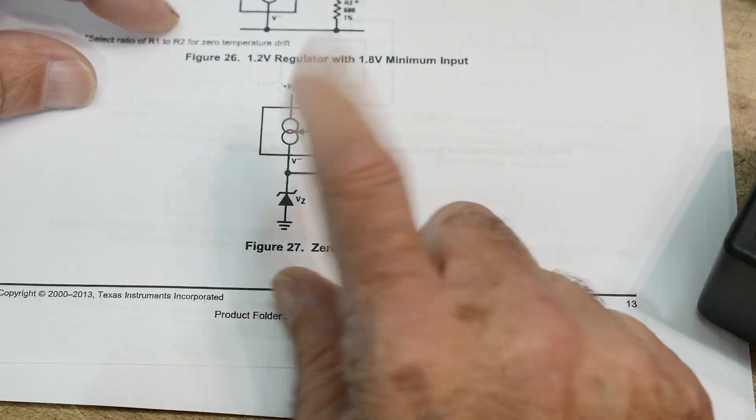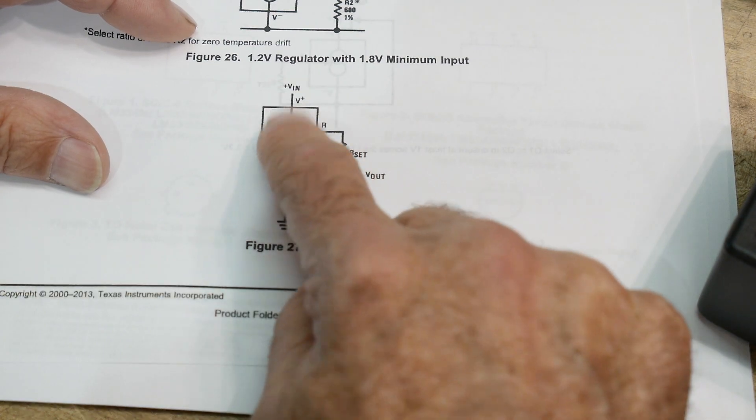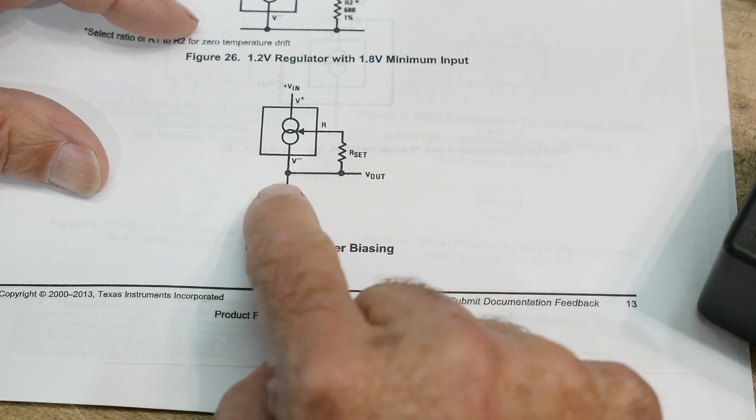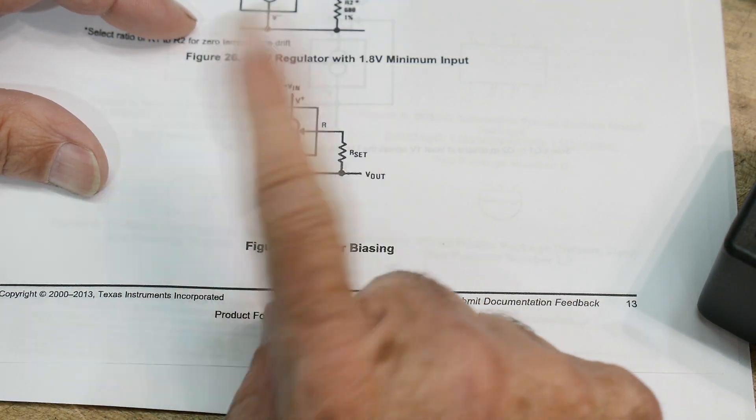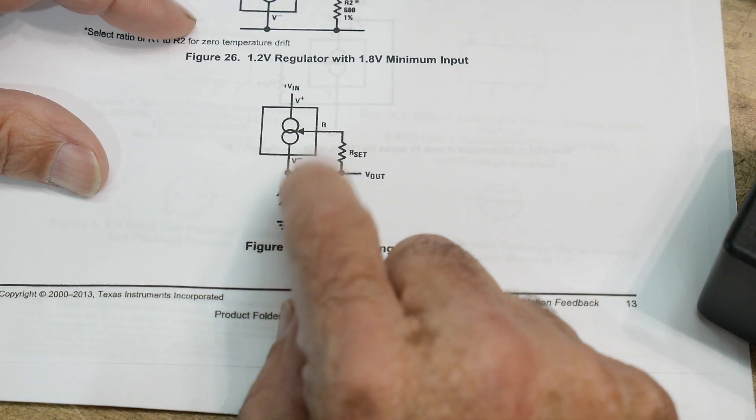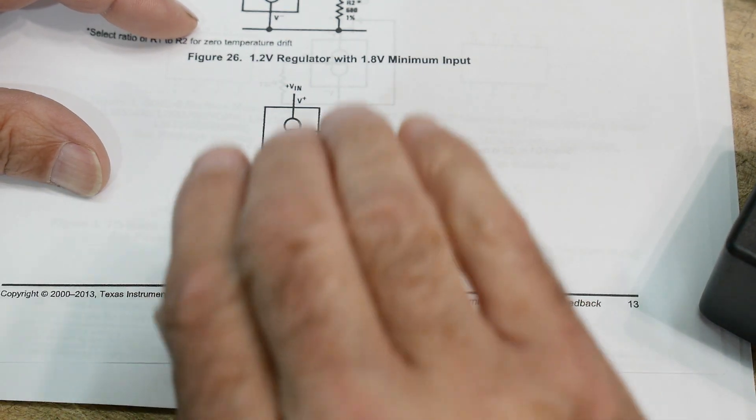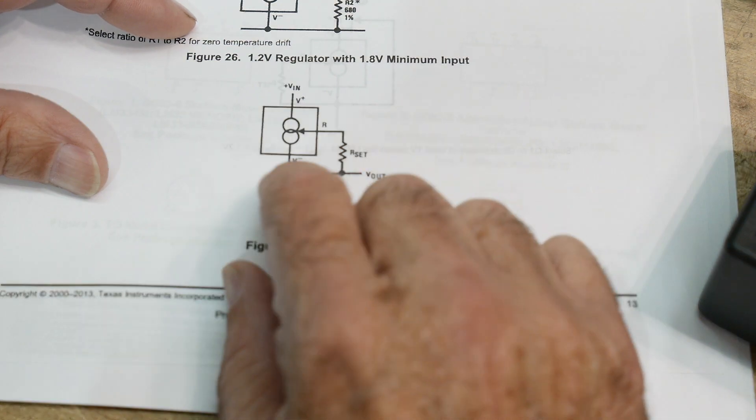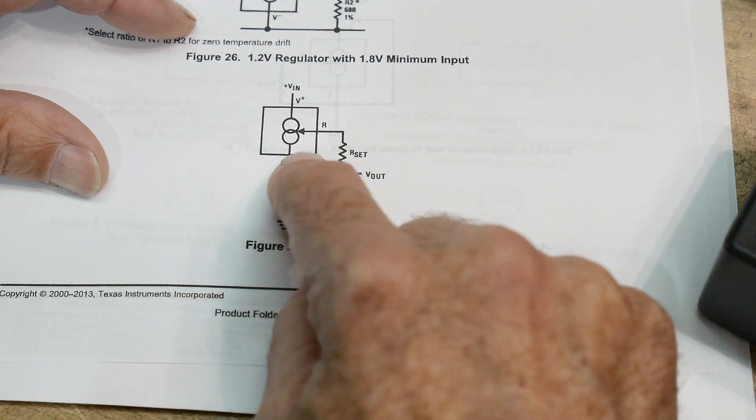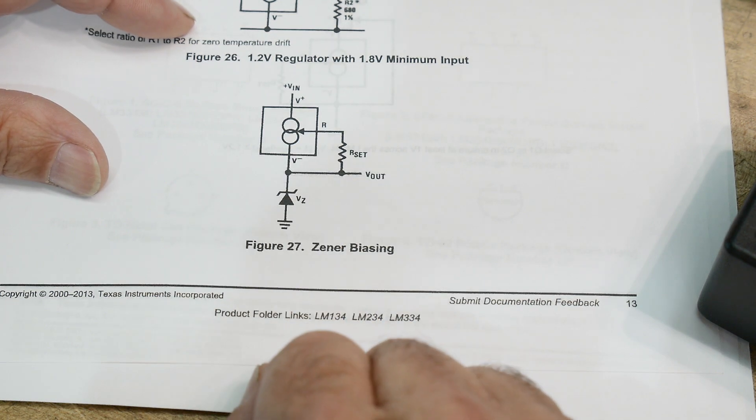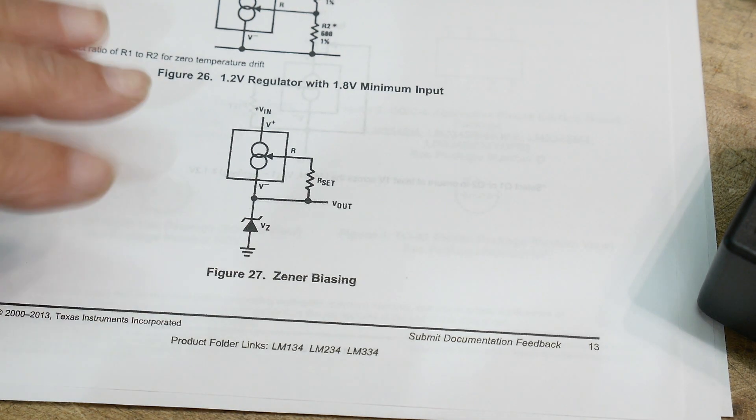Remember Zener diodes? Zener diodes usually have a resistor setting up the current through the Zener diode. But if you have a variable input, the actual voltage will change. Zeners are not flat. They actually will move up and down depending on how much voltage is across them. And by having a constant current that will make them more accurate. So here they're using it to do Zener biasing.